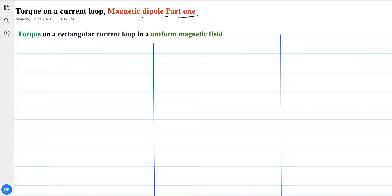We are studying torque on a current loop and magnetic dipole — this is part one. The system is not working properly so I'll break it into parts. First, let's go over what we know about torque: torque as studied in class 11 is r cross F. A current loop means a loop whose beginning and end points meet, with current flowing through it. A magnetic dipole has two ends.